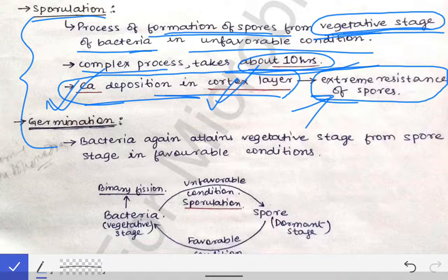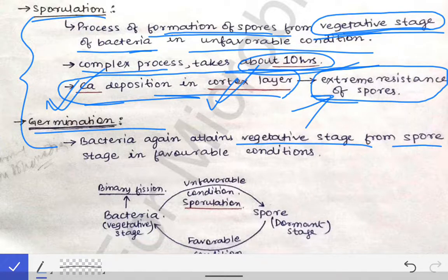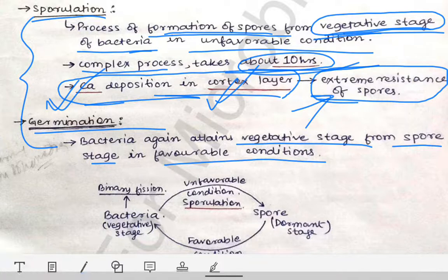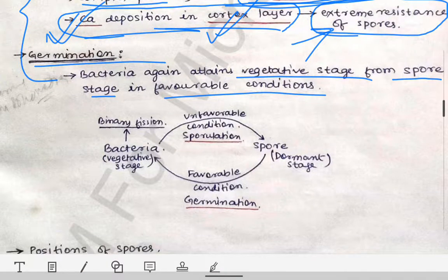Germination is when the bacteria again attains the vegetative stage from the spore stage, under favorable conditions. When there is presence of nutrients, better temperature, and a favorable pH supporting bacterial growth, the spore stage ends and the vegetative stage begins again. This can be shown diagrammatically.